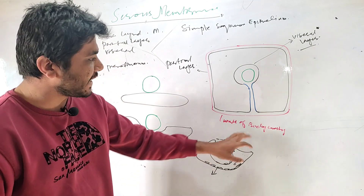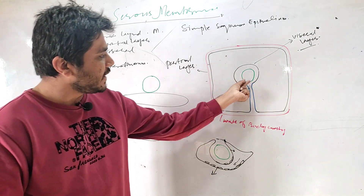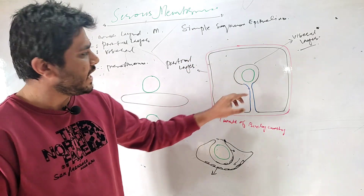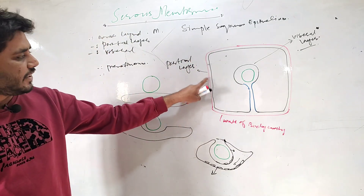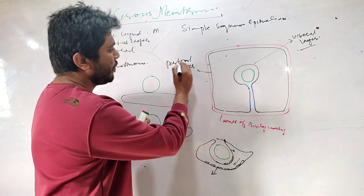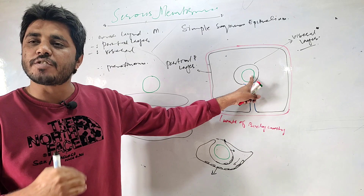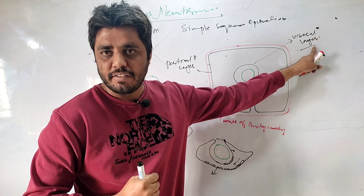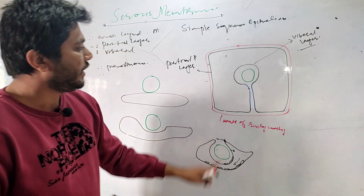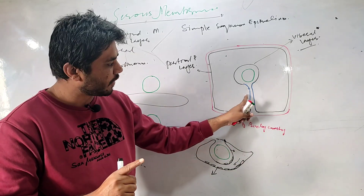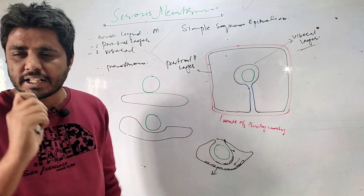For example, let us take this diagram which belongs to the abdomen. This organ is the intestine. So this layer covering the wall will be called parietal peritoneum, and the layer covering the organ will be called visceral peritoneum. One more thing — this fold will be called mesentery. This is important in the case of the intestine and the abdominal cavity.